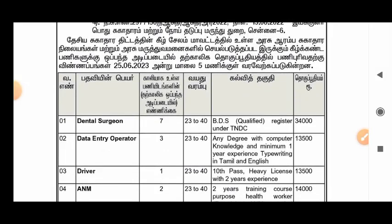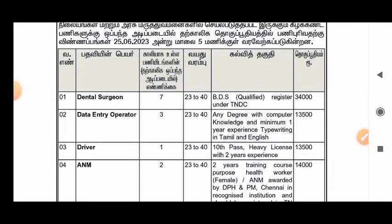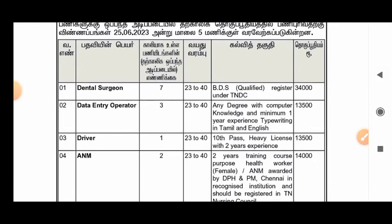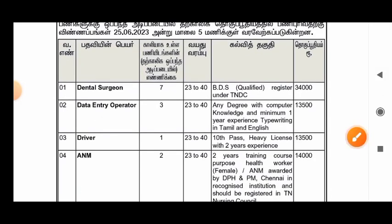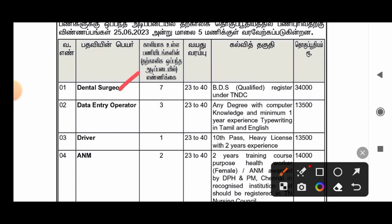If you want to see the post, there is a dental surgeon. You need to see a dental surgeon after the entire semester. In the next week, you will see that the age is 20 to 60. You also have a BDS, and when you see that the register under TNT in TC, the salary will be 85,000.